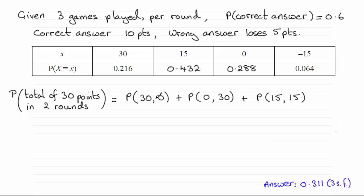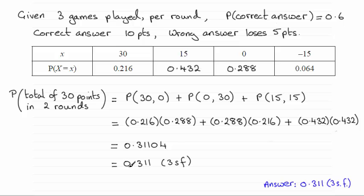So when you substitute our values in that we're given from the table here, you should end up with a calculation like this. For the 30 you've got 0.216 as its probability, and for the 0 here 0.288, and so on. Work that out and you will find that you will get 0.311 to three significant figures.